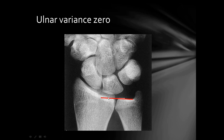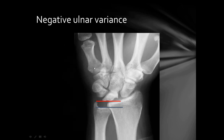Here is an example: we draw a line through the lunate facet of the distal radius and through the distal articular surface of the ulna. In this case there is no difference, so the ulnar variance is zero. In another case, the ulna is shorter than the radius, giving negative ulnar variance — this is more involved in Kienböck's disease.